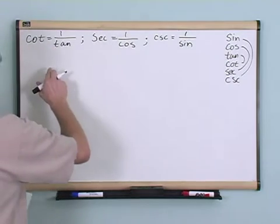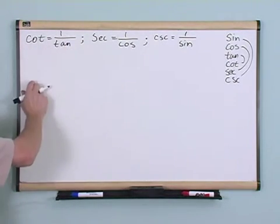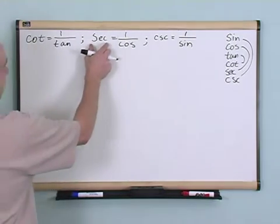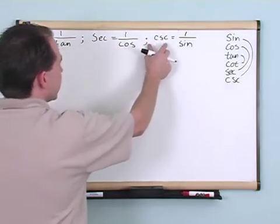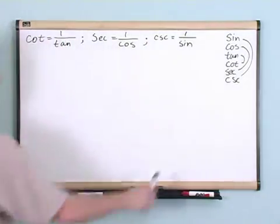So these are identities. What it's telling me is I can write cotangent in terms of an expression of tangent. It just so happens it's fairly simple—it's just 1 over tangent. Here I can write secant in terms of cosine and cosecant in terms of sine. I've given you this nice tool to help you remember these.